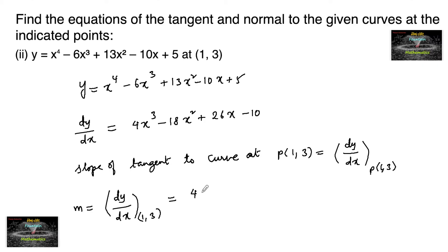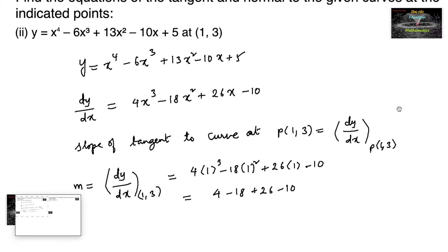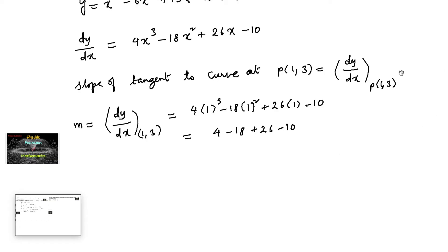We get 4(1)³ - 18(1)² + 26(1) - 10, which gives 4 - 18 + 26 - 10. That is 4 + 26 = 30, then 30 - 10 = 20, and 20 - 18 = 2.